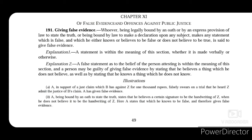The explanation says a statement is within the meaning of this section whether it is made verbally or otherwise — so verbal, oral, written, or any kind of statement is covered. Another explanation says a false statement as to the belief of the person attesting is within the meaning of this section. A person may be guilty of giving false evidence by stating that he believes a thing which he actually does not believe, or by stating that he knows a thing which he does not know.